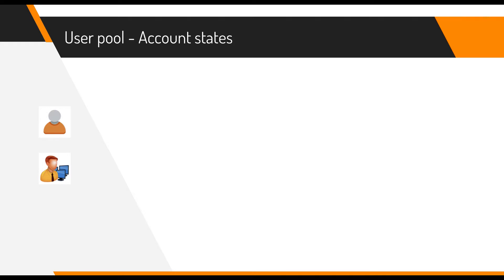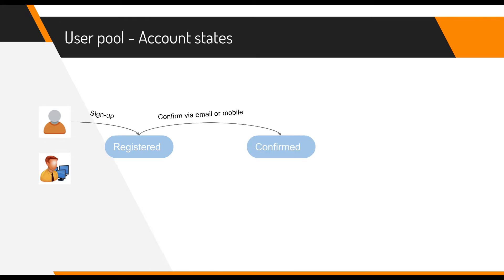If we use Cognito as a user registry, what are the different states for a user account? You can offer users the ability to sign up through your application by writing code in your web or mobile client and using Cognito APIs to start a sign-up flow. This puts the user in a registered state — they exist in Cognito but cannot yet log in. Cognito will send a notification asking for verification of email, mobile phone, or both, depending on your configuration. Once the user confirms, they move to a confirmed state and can log in.